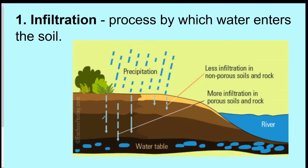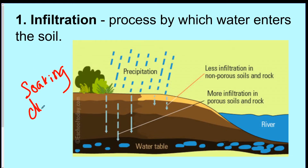The first vocab word is called infiltration. This word means that water enters the soil — it's a fancy name for water soaking through the dirt. That's what infiltration means. There's a lot of vocab in this unit, so write down infiltration and know what that means.